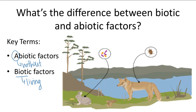Biotic or living factors are the organisms and the relationships between other organisms — so like this rabbit and its relationship with this fox, or this rabbit and its relationship with the dandelion. All these are biotic factors.